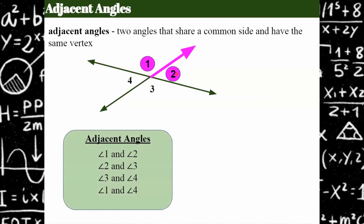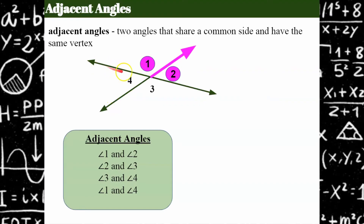The adjacent angles in this picture are angles one and two. Then we have angles two and three — they share this common ray. Angles three and four are adjacent and share this ray. And angles one and four are adjacent because they share this ray.